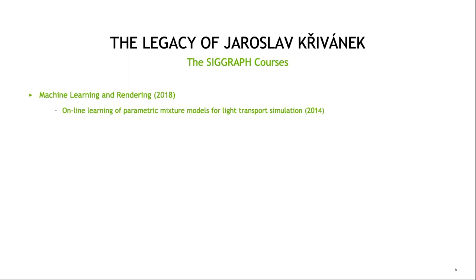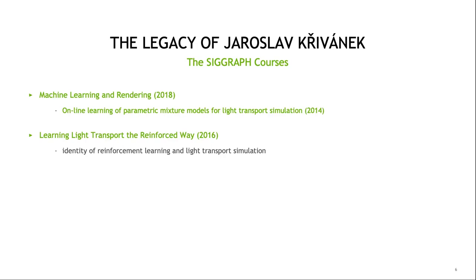In 2014, Jaroslav's student Jiří Vorba and team presented online learning of parametric mixture models for light transport simulation. Core of the algorithm was that light transport simulation could be made more efficient by learning which light transport paths were important. This seminal article caused an avalanche of articles on machine learning and rendering, which became the subject of the 2018 SIGGRAPH course. Work that followed showed that reinforcement learning and light transport simulation follow the same integral equation — all that needed to be done was guiding paths towards the light sources.